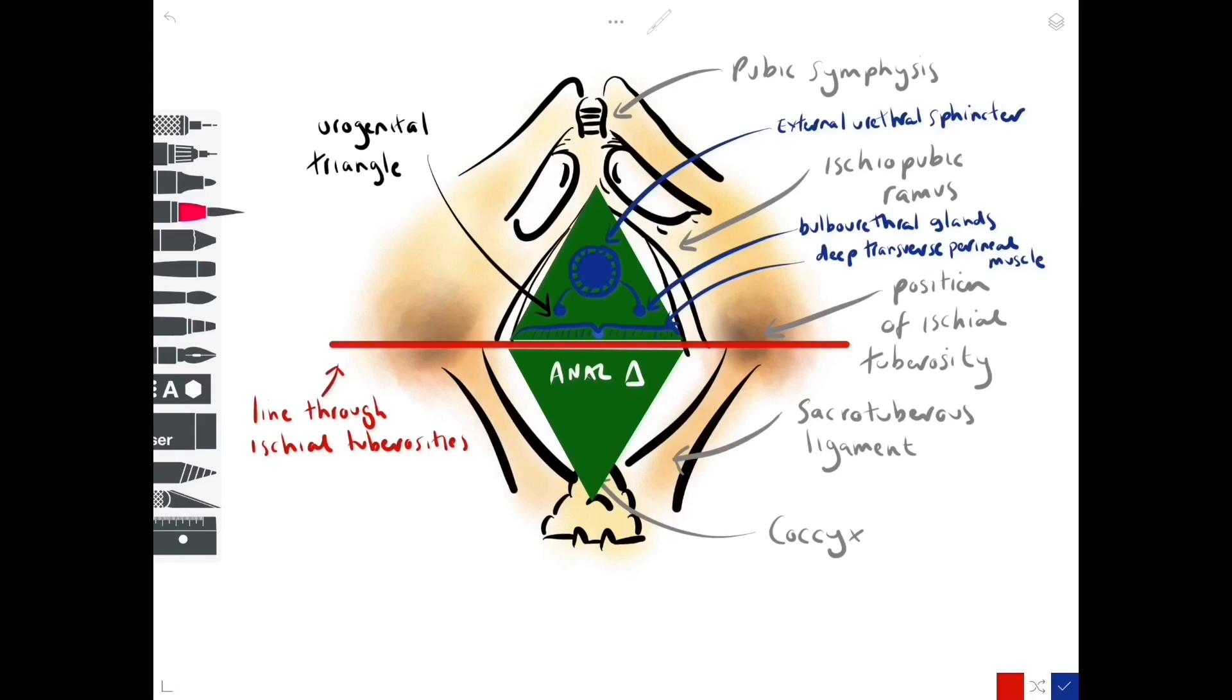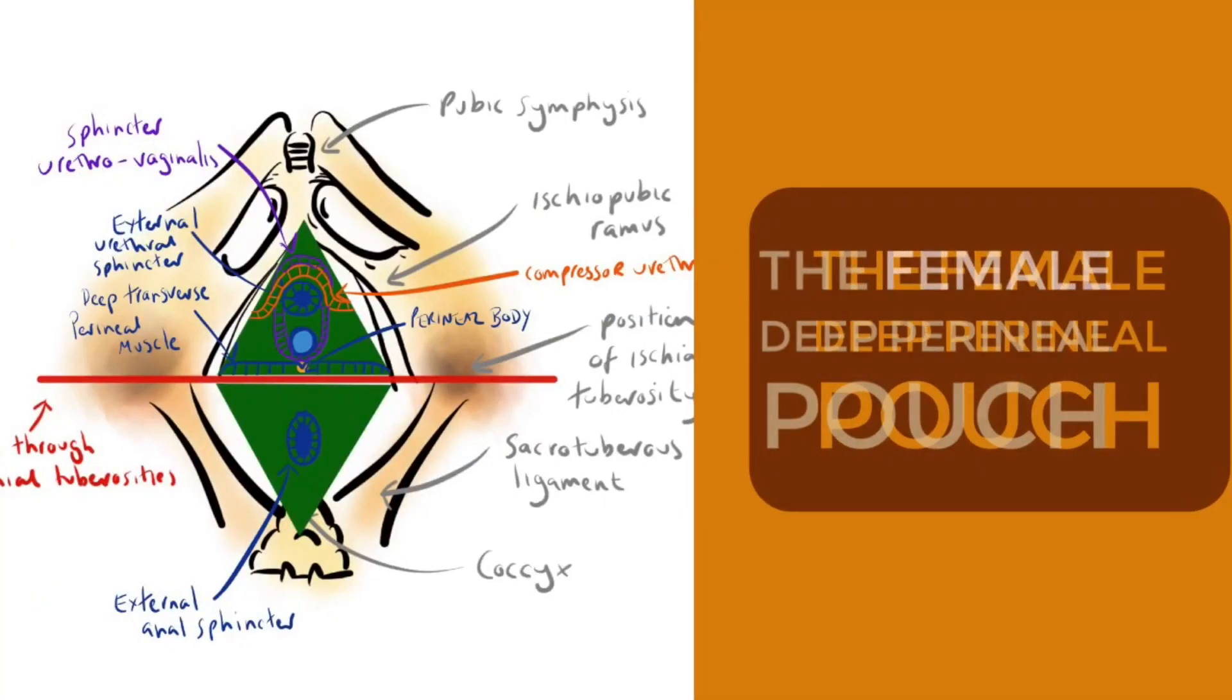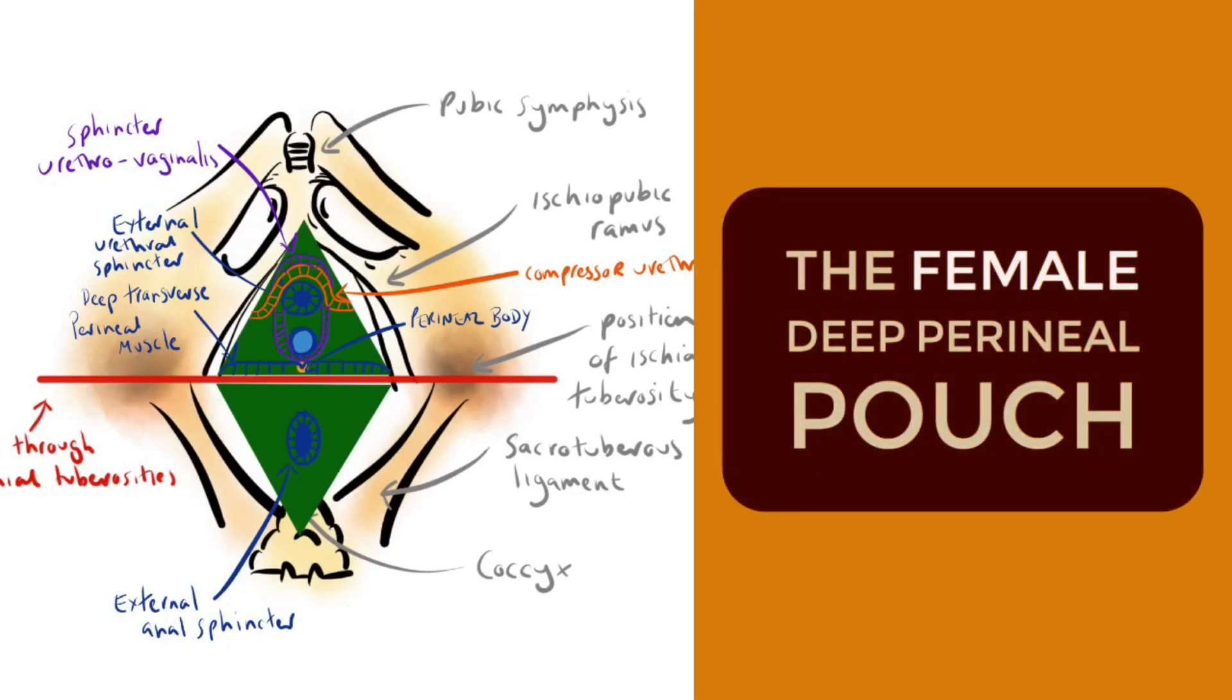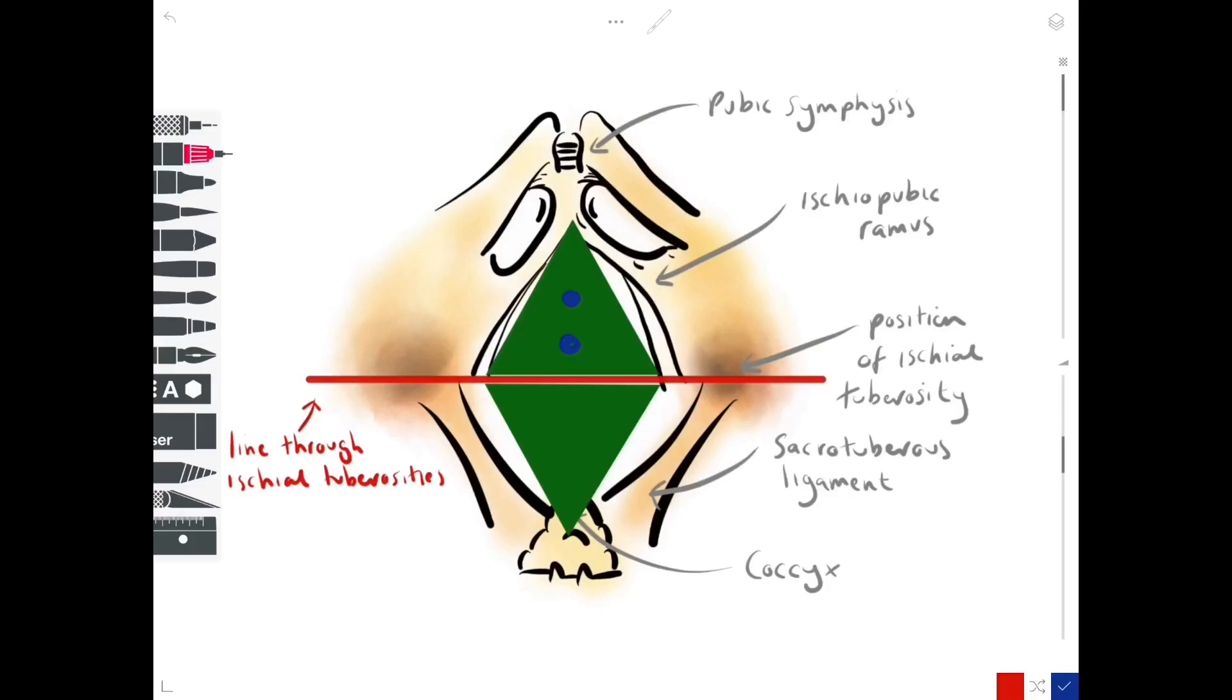So the male deep perineal pouch is fairly straightforward, not an awful lot going on. You'll find that the female deep perineal pouch is a little bit more elaborate. First of all, we've got the perineal membrane that is pierced by both a space for the vagina and the urethra.